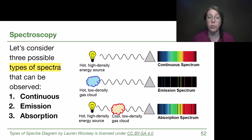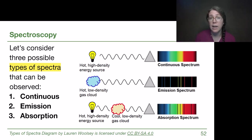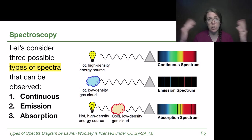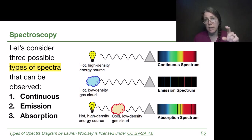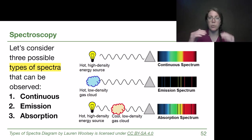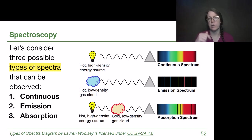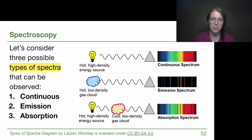A second situation is if we have a cloud of gas out in space that is heated — it has a lot of energy, meaning the electrons are already at high energy levels. They want to drop down, and so electrons from that hot cloud will fall to lower levels, releasing emitted photons at specific wavelengths. We get the specific wavelengths associated with any change in the ladder — like the three different Balmer series lines. That would be an emission spectrum, because all we see are emission lines.